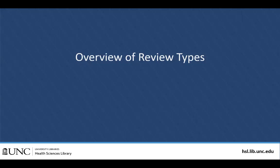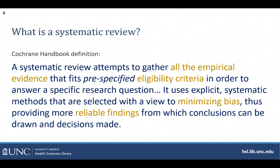First, we will look at the different types of systematic reviews. The Cochrane Handbook for Systematic Reviews includes a definition that lays out how systematic reviews are different from other types of literature reviews. A systematic review is designed to gather all of the evidence that answers a particular question and your preset eligibility criteria. So rather than a narrative review which only gathers some of the literature, or other types of reviews that cherry pick the evidence to quickly provide examples or answer a hypothesis, a systematic review goes through all of the evidence available to answer the research question.